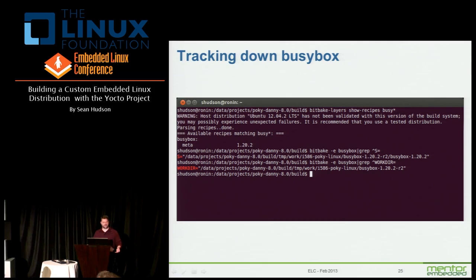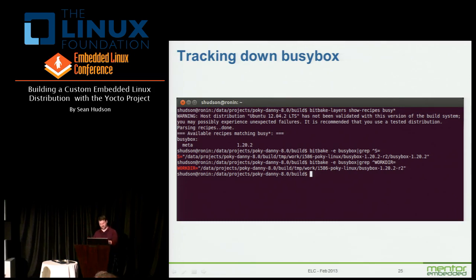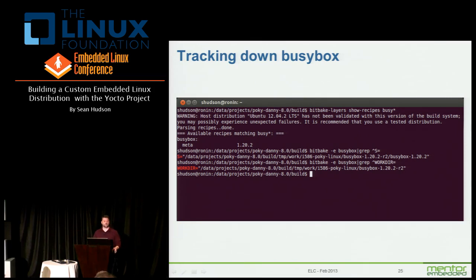That tells me it exists and gives me information about where to find it. But what about where the output went? The next line down I did that environment command and grepped for 'S' — now I can figure out where the source is coming from. When it got extracted, it got extracted into that subdirectory which is that long path after the S. The work directory is basically one directory up from that. So if you want to look at and work with the BusyBox recipe — for instance if you want to reduce the BusyBox pieces for size — that's where you would go.